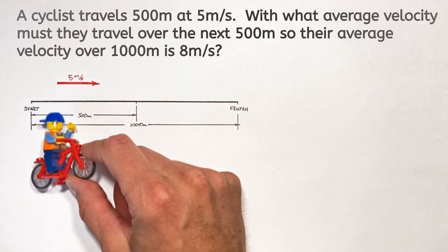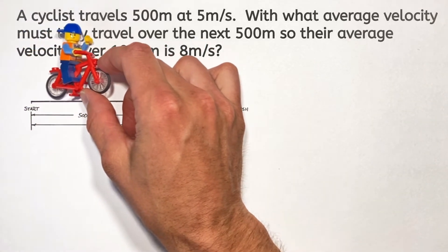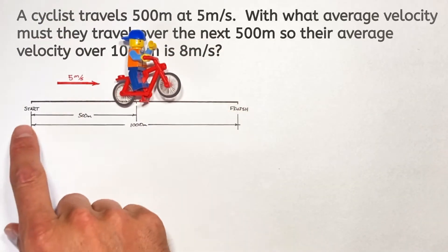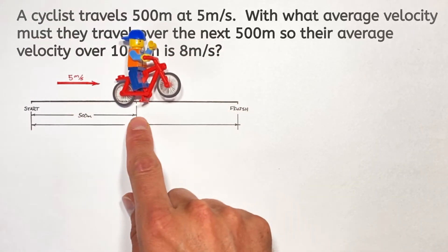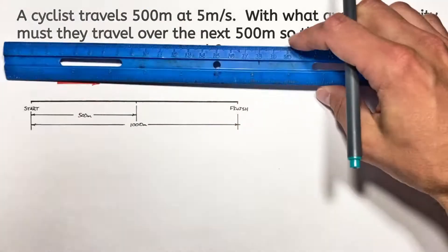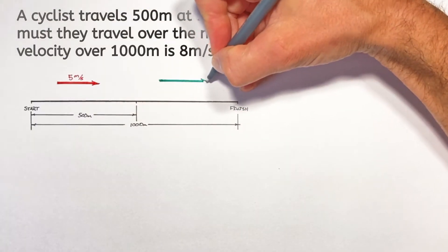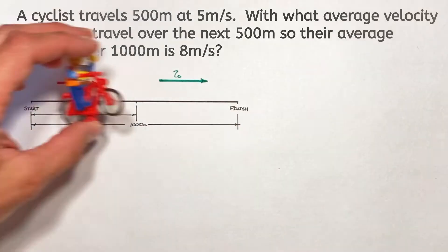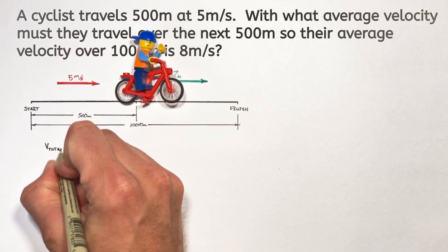And back again to help us out is our little guy on a bicycle here. You see this problem goes that a person on a bike is going to cruise along at 5 meters per second for a total of 500 meters. And then we're trying to figure out how fast they're going to have to travel in order to cover a 1000 meter course with an average velocity of 8 meters per second.